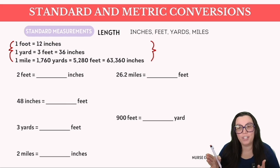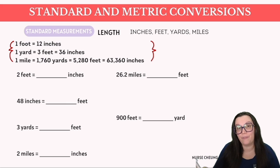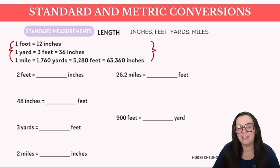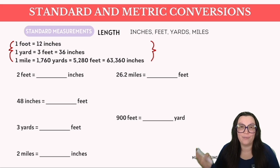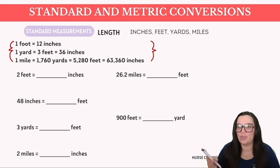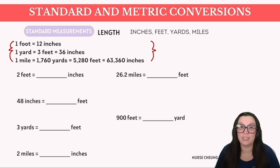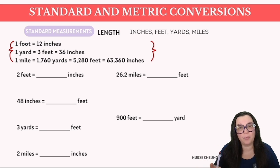One yard is equal to three feet or 36 inches, and one mile is equal to 1,760 yards, or 5,280 feet, or 63,360 inches.